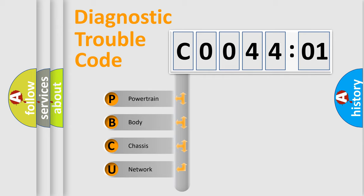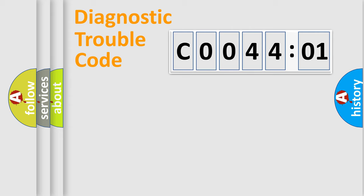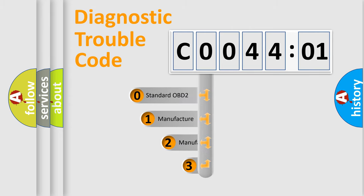We divide the electric system of automobile into four basic units: Powertrain, Body, Chassis, and Network. This distribution is defined in the first character code.